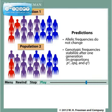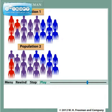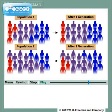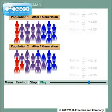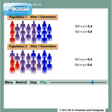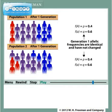Let's see what happens to populations 1 and 2 after a single generation. After one generation, the proportions of individuals with different body colors change in each population. Now the genotypic frequencies are the same in population 1 and population 2, despite being different in the preceding generation. Further predicted by the Hardy-Weinberg law, the allelic frequencies of both populations have not changed from those of the preceding generation.